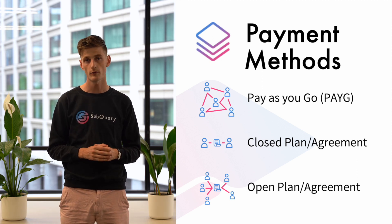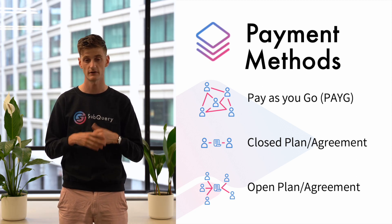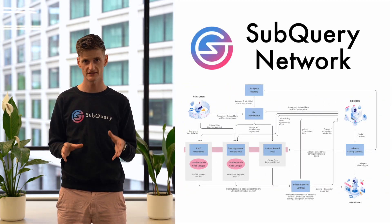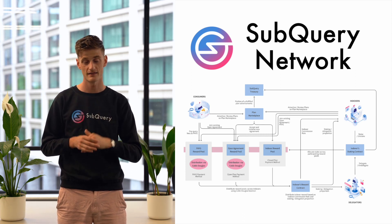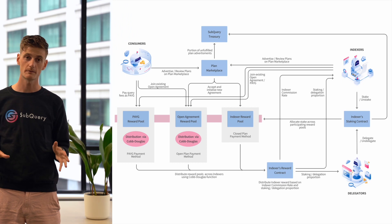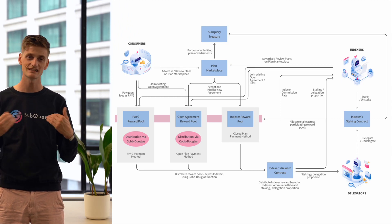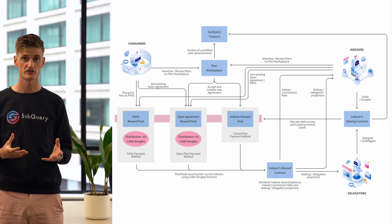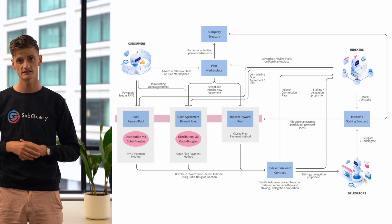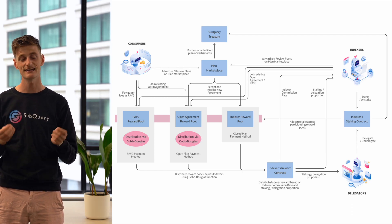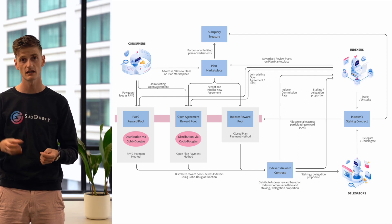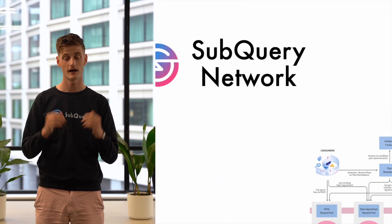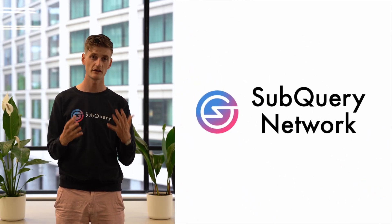The combination of these three new payment models really changes things at the subquery network — it makes it much more flexible for consumers to pay for data in the ways that make sense for them, and gives indexers greater certainty of income, which is really important when running an expensive indexing process. I encourage you all to read the rest of the white paper, including the token flow diagram. If you have any questions, please join our Discord. We are deep at work building the future of Web3 infrastructure, with a lot of effort going into designing an economic model that is robust, reliable and scalable. Thank you for being a part of our efforts to revolutionize how we do Web3 infrastructure.